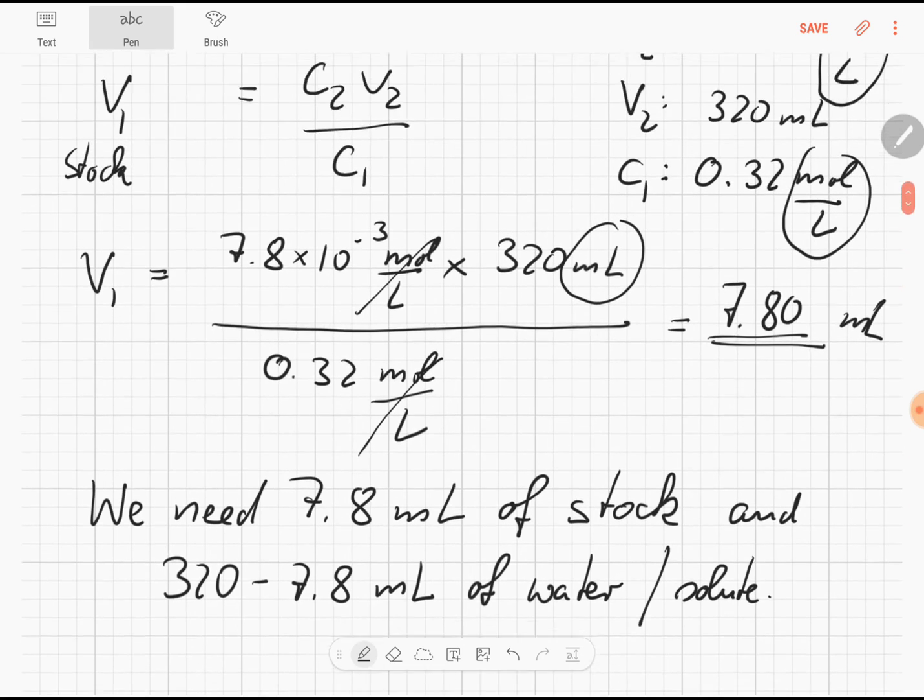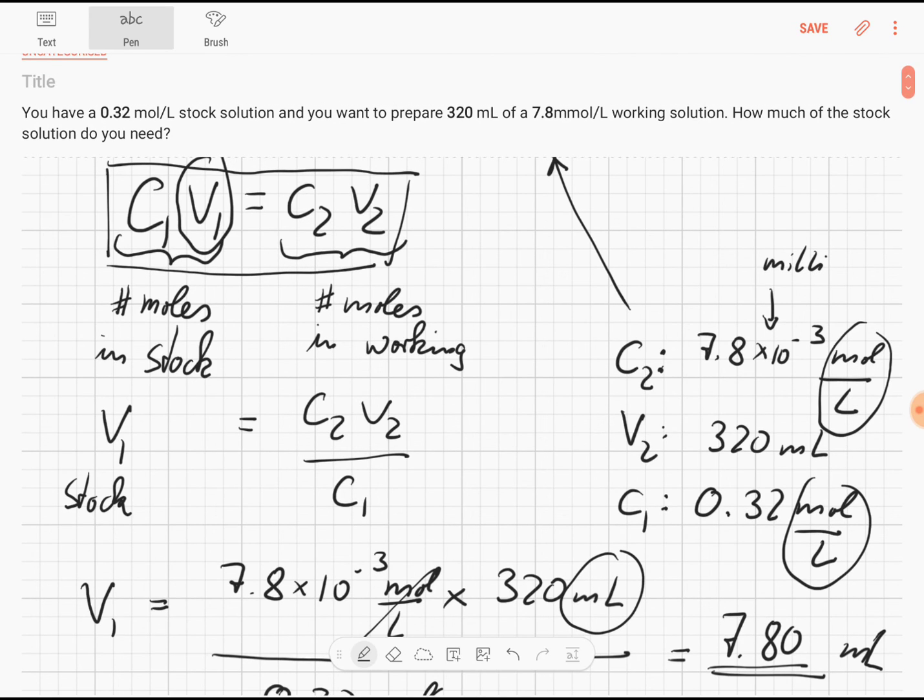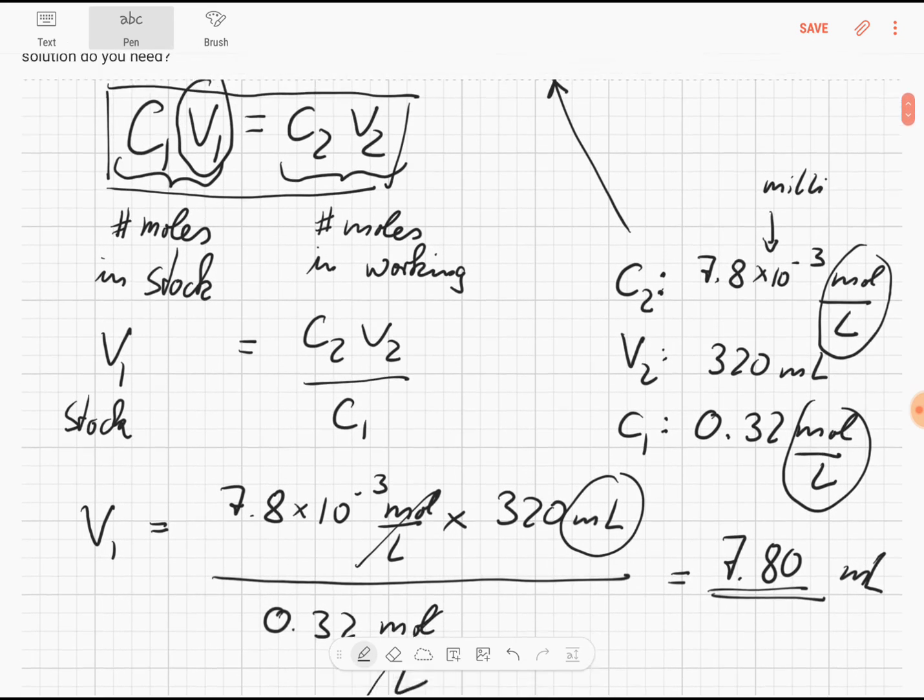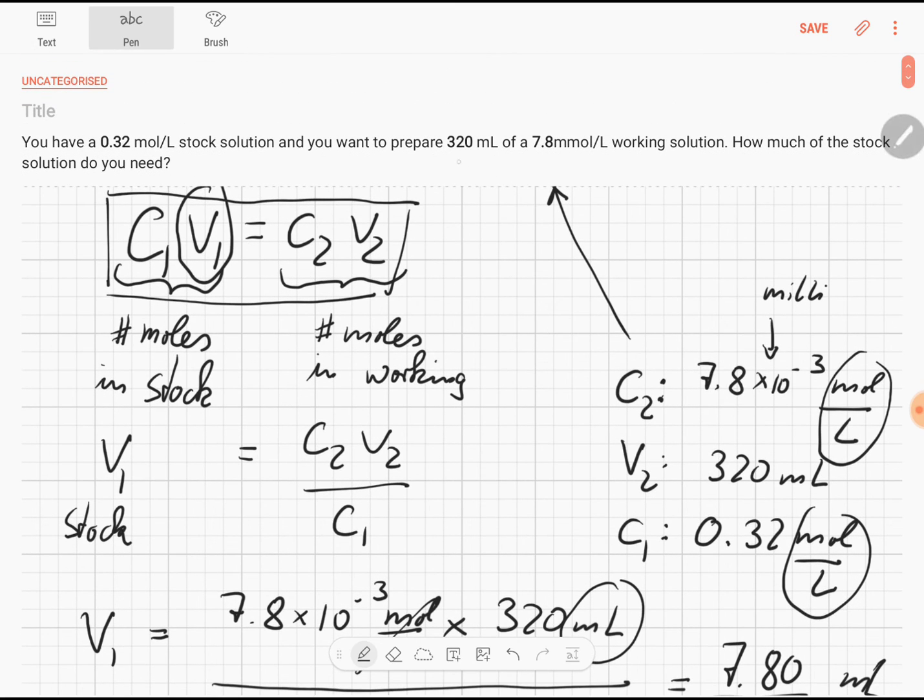With this method, the C1V1 equals C2V2, we can very easily calculate how much of a stock solution we actually need in order to get a given volume and a certain concentration of a working solution. Thank you very much for watching and I hope this tutorial is useful.